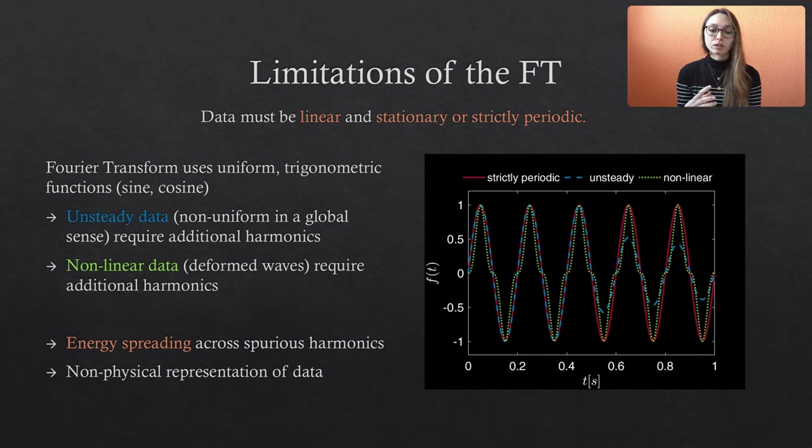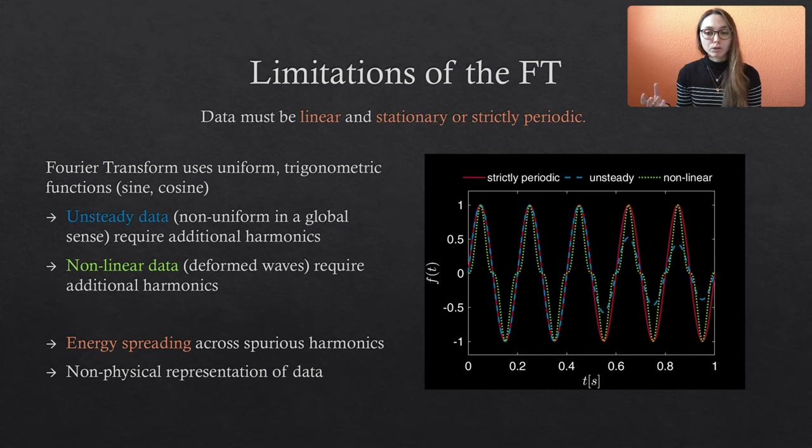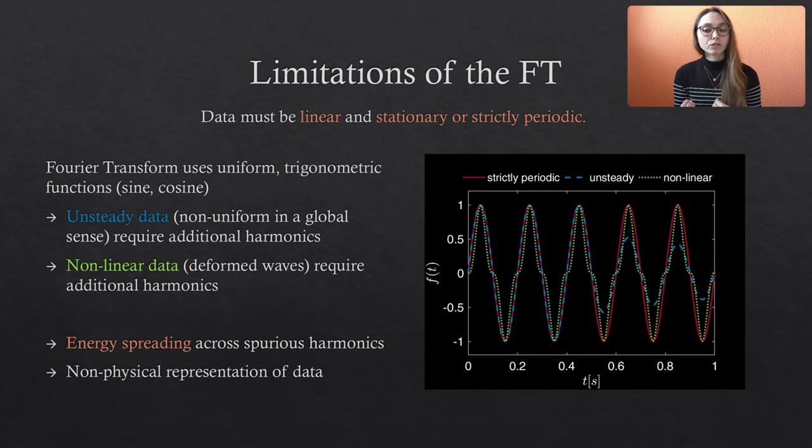Consequently, the Hilbert spectrum would deviate from a physically meaningful representation of the data's energy and frequency content. Please note that we do not face this issue when we apply the Fourier transform within the framework of the Hilbert transform itself. This issue only exists in the frequency domain when we consider individual frequencies, not when we consider the data as a whole. So for the Hilbert transform, we do not care about the individual components and their values in the frequency domain. Since we transform the data back into the temporal domain, we recover the properties of the original data and any non-physicality is compensated.